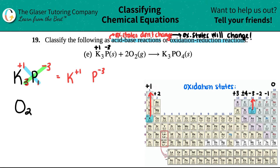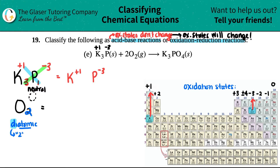Now let's look at O2. What is the charge of oxygen in O2? This is a diatomic — 'di' means two, so there are two atoms of the same element existing together. If you have a diatomic with no charge shown in the upper right-hand corner, it has to be neutral, meaning its charge is zero. Diatomics always have a zero charge for that element, so oxygen here is zero.